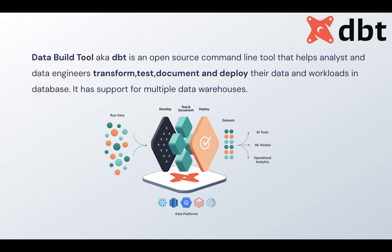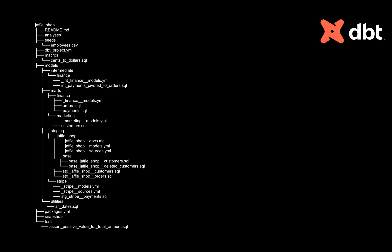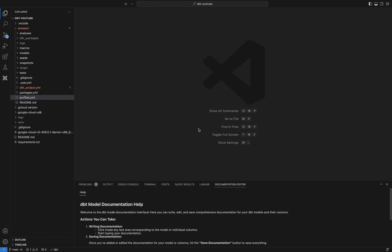dbt is a data build tool — an open source command line tool that helps you do the transformation in ELT. We already know about extract, load, and transform, so this data build tool helps you complete the transformation part. You can also do testing and documentation. I've already explained dbt in my previous video, including the difference between dbt Core and dbt Cloud. In this video we focus on the dbt Core project itself, and I've created a dbt Core project to show you the project structure.